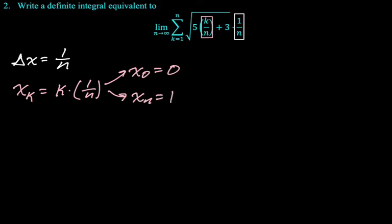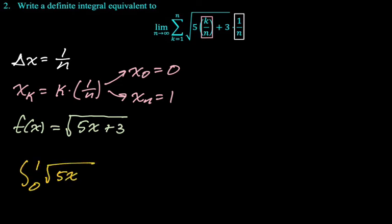Now we said if x sub k is k over n, then we're doing the square root of 5 x sub k plus 3. The function should be the square root of 5x plus 3. And now we just write our integral. So our integral is going to be the integral from 0 to 1, square root of 5x plus 3, and then dx. Okay, so that's one way of doing it. But there are other ways.